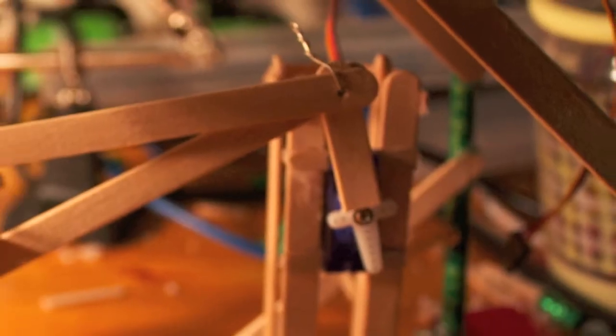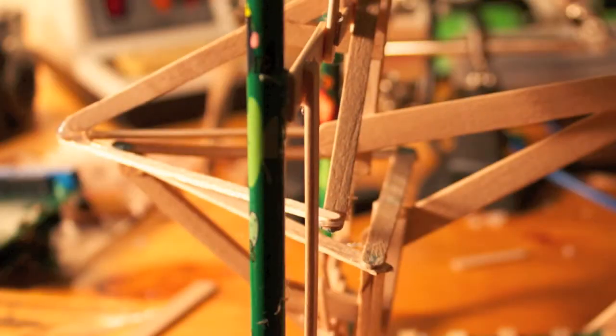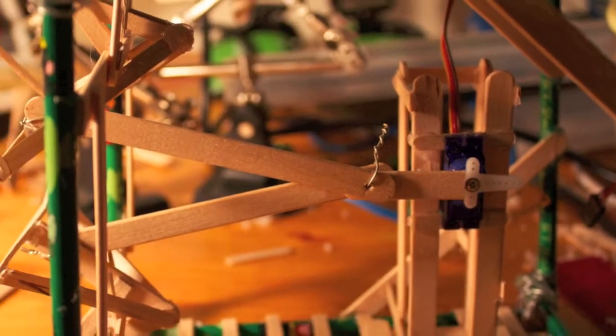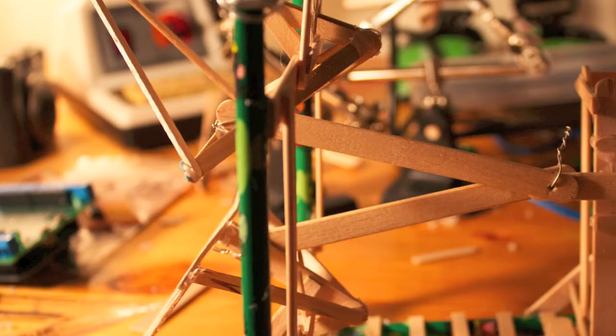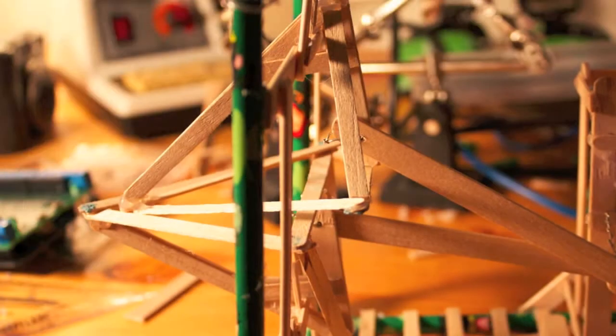When the servo is in its default position, the beak is in overbite closed. When the servo moves to the middle, the beak is pushed open. When the servo moves down, the beak is in underbite closed.